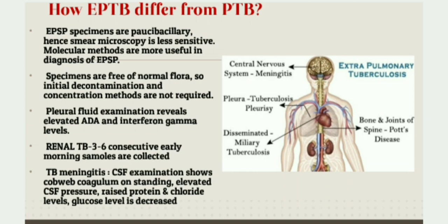Specimens taken in case of extra pulmonary TB will be free from normal flora. Hence, the initial decontamination and concentration methods are not required. On examination of pleural aspirate in case of pleural tuberculosis, there will be elevated ADA (adenosine deaminase) and interferon gamma levels. In case of renal tuberculosis, urinary excretion of the bacilli is intermittent, so 3 to 6 consecutive early morning urine samples are collected, centrifuged, and the sediment is used for processing.